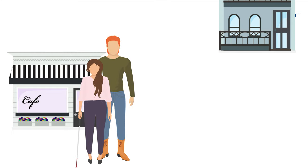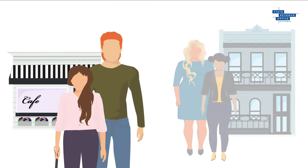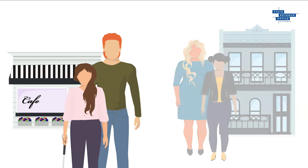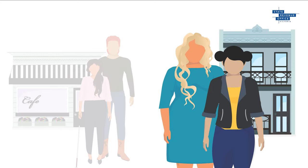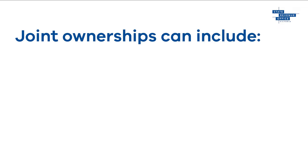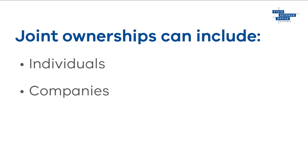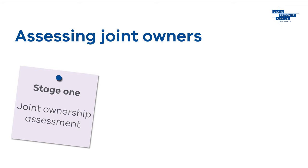If you own land with others, you are a joint owner of land. Each unique combination of owners is considered a unique joint ownership, and each joint ownership is assessed separately for land tax. Joint ownerships can include any combination of individuals, companies, and trusts.